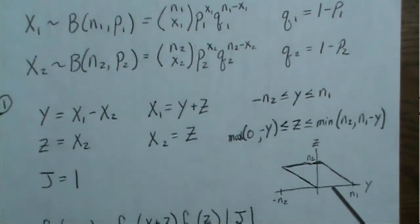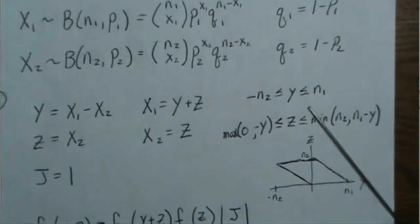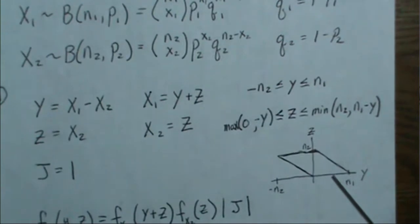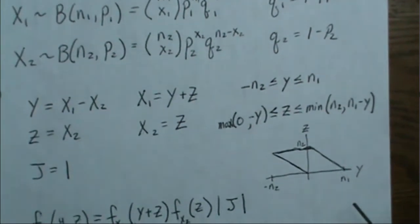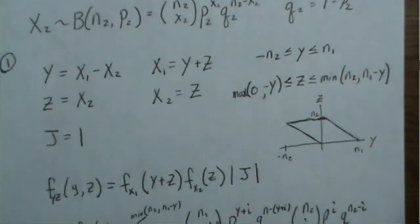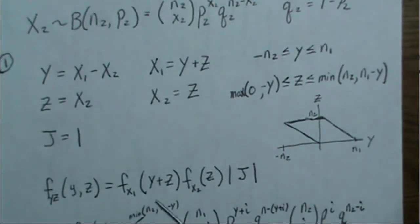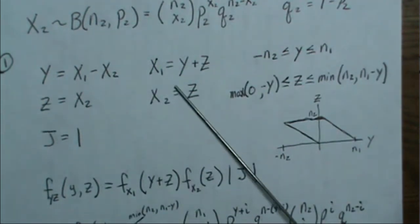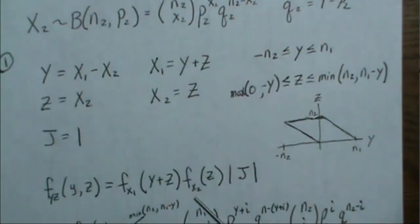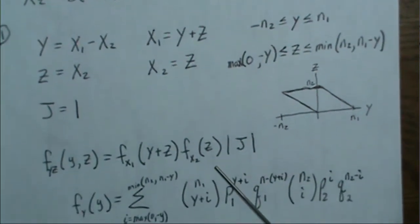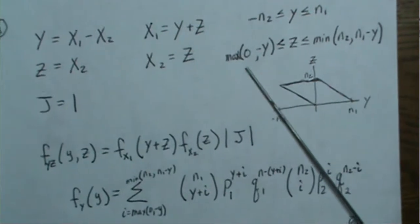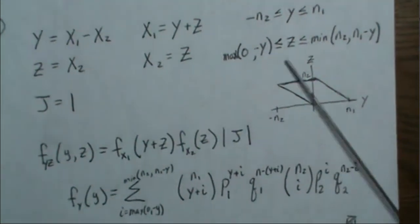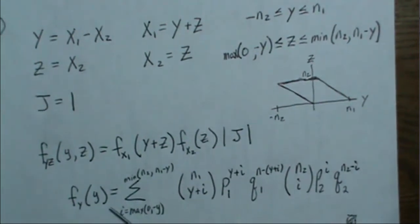And so there are regions that we have to be careful when we sum. So for any given value of Y, the Z value is limited to what it can equal. The normal approach here is we find the joint density, which is the product of these two, where this is the original X1 density with Y plus Z plugged in, and then this is X2 with Z plugged in. And then we integrate out Z. Remember that Z went from the maximum of those two to the minimum of these. And this is the density.